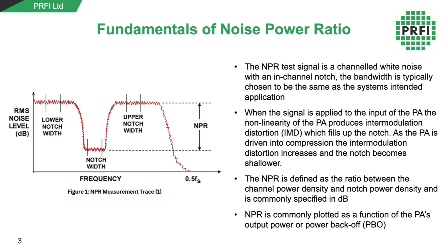Let's go through the fundamentals of noise power ratio. If we look at the spectral plot there are two key areas of the signal that we're interested in: the channel and the notch. The channel contains a wideband white noise signal that has the same bandwidth as the signal that we intend to use in our end application.